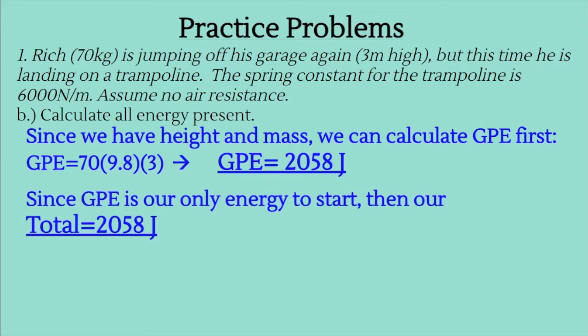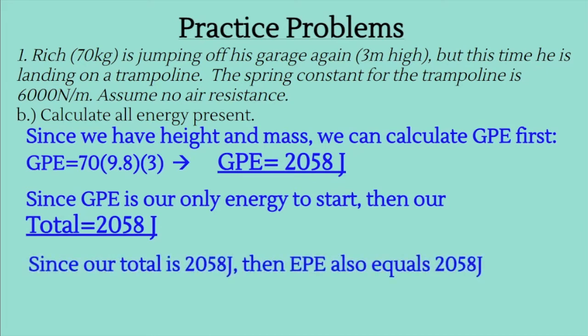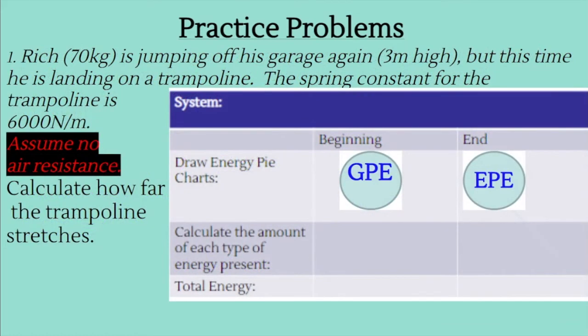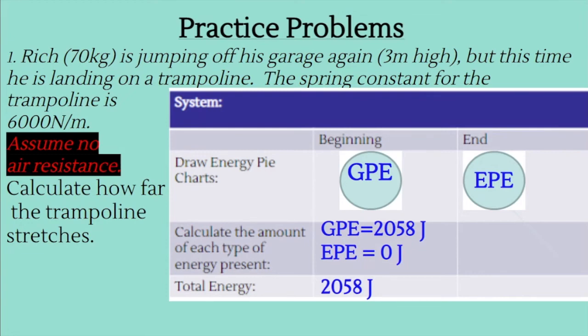Since GPE is our only energy at the start, total energy is 2,058 joules. Because total energy at the beginning equals total energy at the end, EPE is also 2,058 joules — all of the GPE transferred into EPE. At the beginning: 2,058 J GPE, 0 J EPE. At the end: 0 J GPE, 2,058 J EPE. Total stays the same.